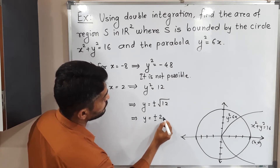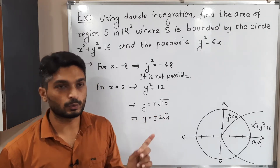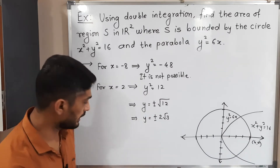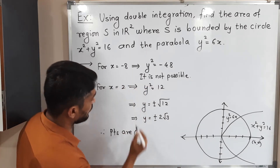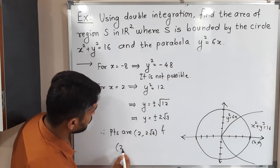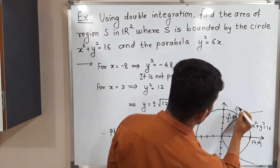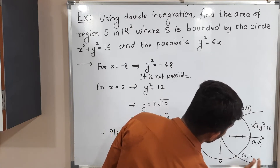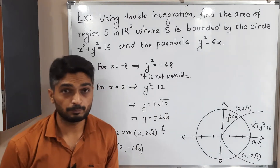Therefore y = ±√12 = ±2√3, since 12 = 4 × 3 and 2 comes outside. Both possibilities exist. So the points of intersection are (2, 2√3) and (2, -2√3).